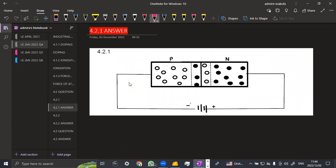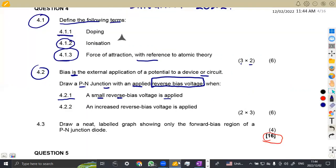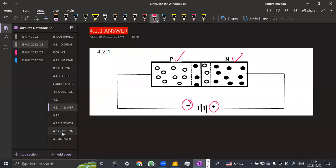Reverse bias, the negative connected to the P-type, the positive to the N-type. So this is whereby a small amount of voltage is being applied. What about when there is now an increased reverse bias voltage that is applied? When you increase, then the more depletion layer is going to be created.